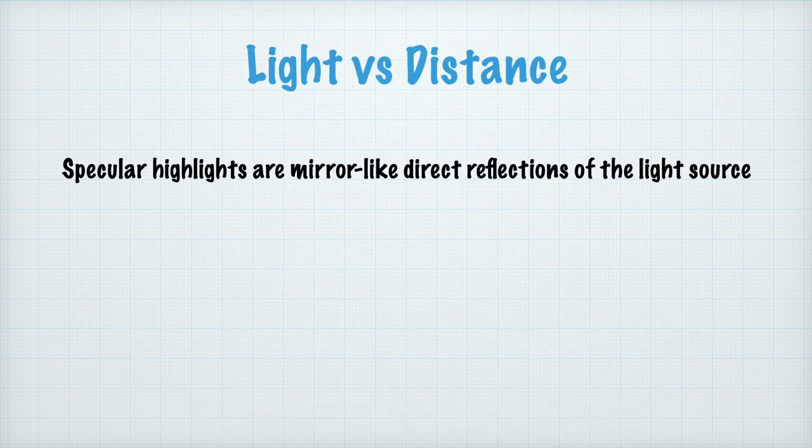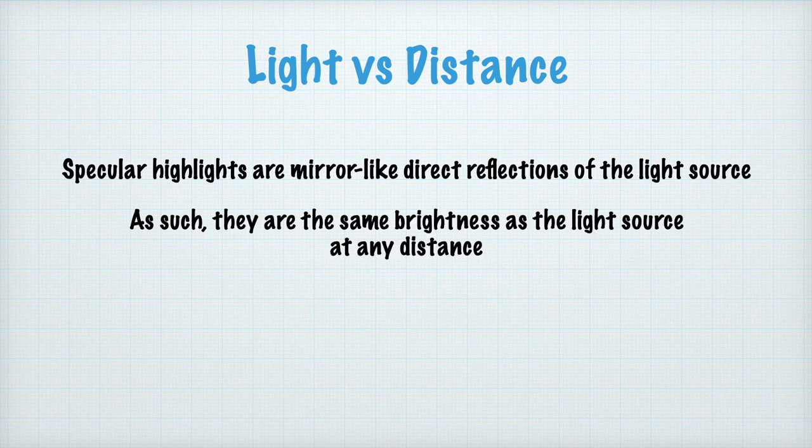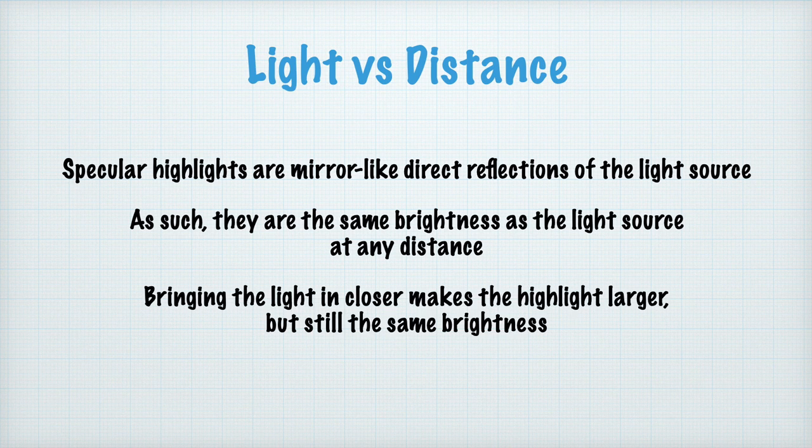Specular highlights are mirror-like direct reflections of the light source. As such, they are the same brightness as the light source at any distance. Bringing the light in closer makes the highlight larger, but still keeps the same brightness.